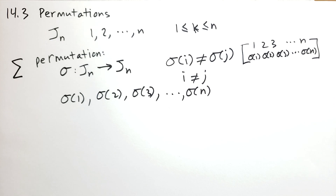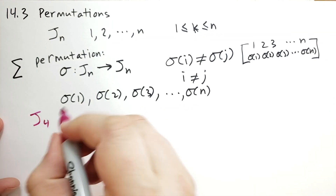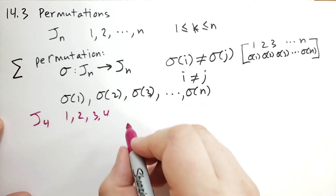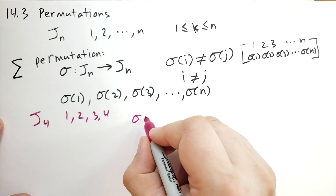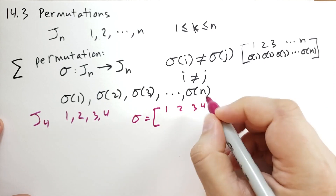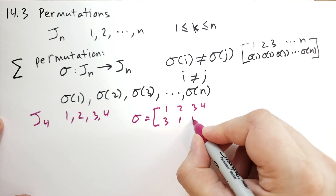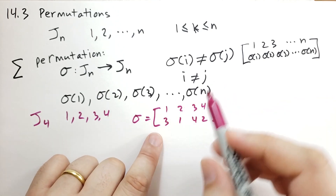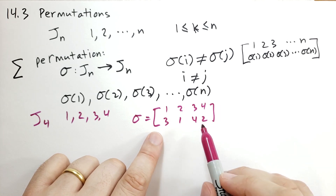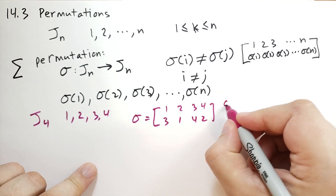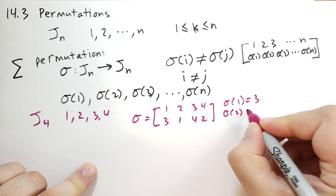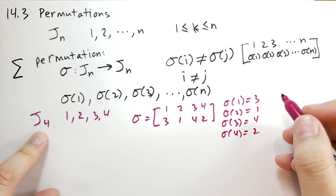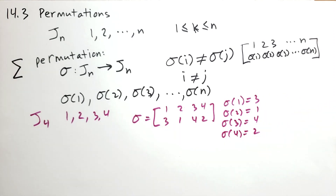As an example, let's take J_4, which includes the numbers 1, 2, 3, and 4. A valid sigma could map [1, 2, 3, 4] to [3, 1, 4, 2]. So sigma(1) = 3, sigma(2) = 1, sigma(3) = 4, and sigma(4) = 2. Notice that all of these output numbers are distinct — none of them are the same because of that injectivity rule. We still have the same numbers 1, 2, 3, 4; they're just in a different order.